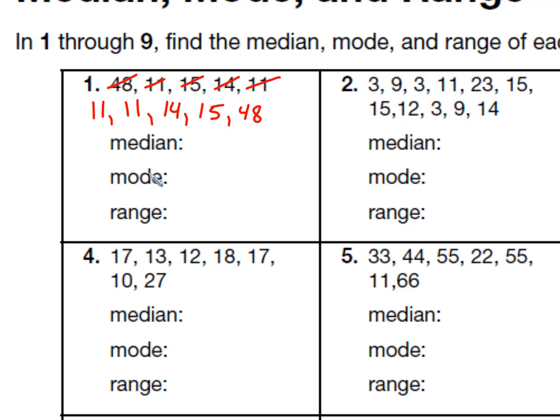Now again, my mode is the most frequently used, most often. And since I have two 11s, that's the number that's used the most. So 11 is my mode. Okay. The median's the number in the middle, which would be 14, because that's in the middle of the set, so 14, and my range would be 48 minus 11, which would equal 37. Good luck.